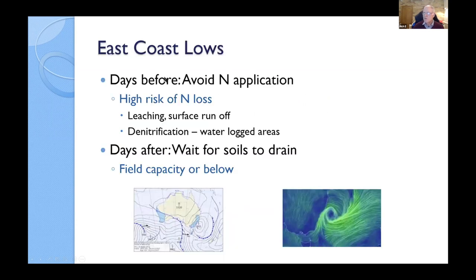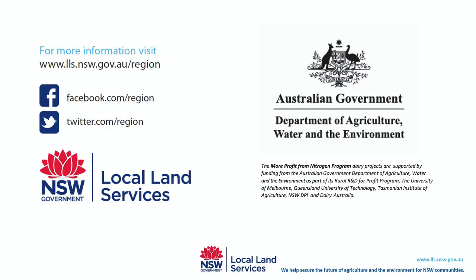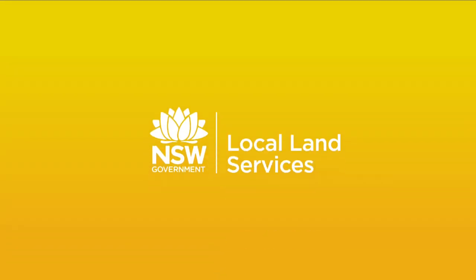So to finish off this introduction, relevant to East Coast lows, I'd be saying in the days leading up to a predicted East Coast low, you would avoid an application of nitrogen fertilizer because it's a high risk of loss through many processes. One could just be simply surface runoff of the ammonia or urea in dissolved form. The second can be if there's nitrate sitting down in the subsoil, you could leach that nitrogen and you could lose nitrogen through denitrification through waterlogged areas on the farm. In the days after an East Coast low, you would wait for it to drain down to field capacity, and then that would be the best time, from my point of view, to put on nitrogen to get the best response. So that's from my side. We'll hand over to Dave now.